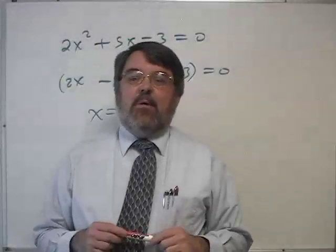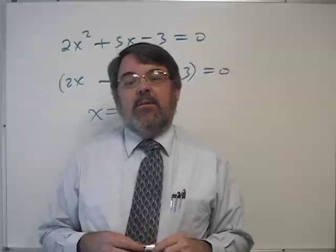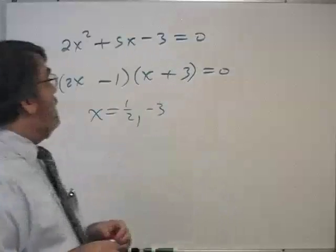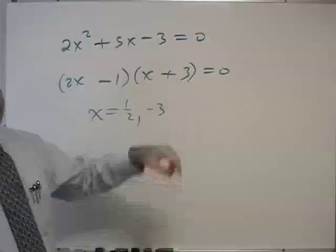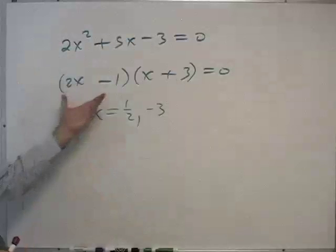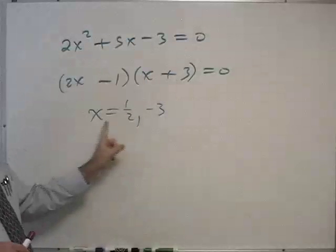I want to go back to the quadratic equation that we solved in the last video. It was 2x squared plus 5x minus 3. We factored it, set each factor to zero, and got two answers.